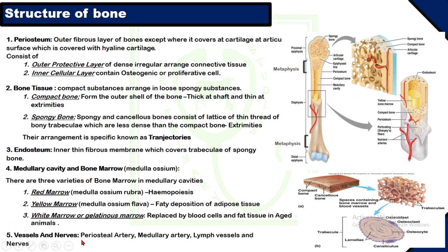The fifth structural component is vessels and nerves. Vessels include the periosteal artery, which is found in the tiny canals of the bones, and the medullary artery or nutrient artery, which is found at the shaft of the bone entering through the nutrient foramen. Lymph vessels and nerves are found at the periosteum of the bone.